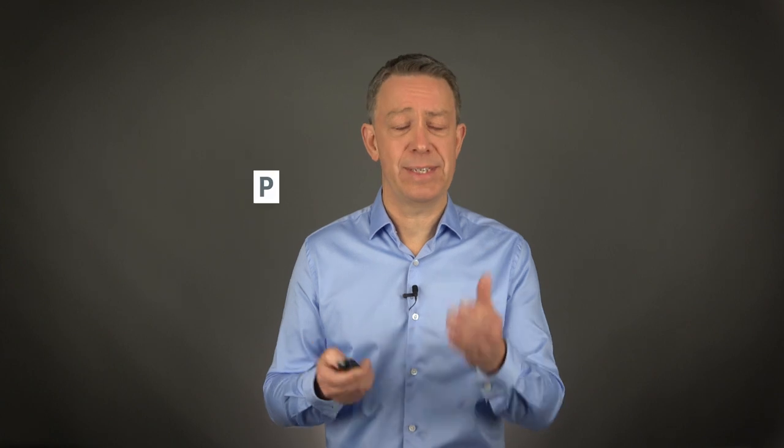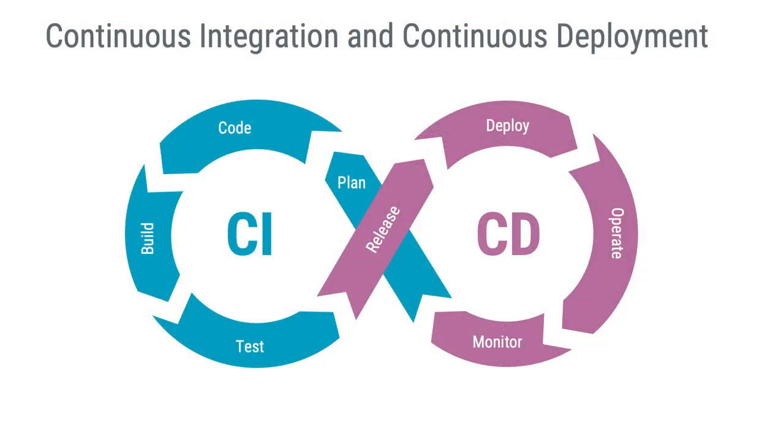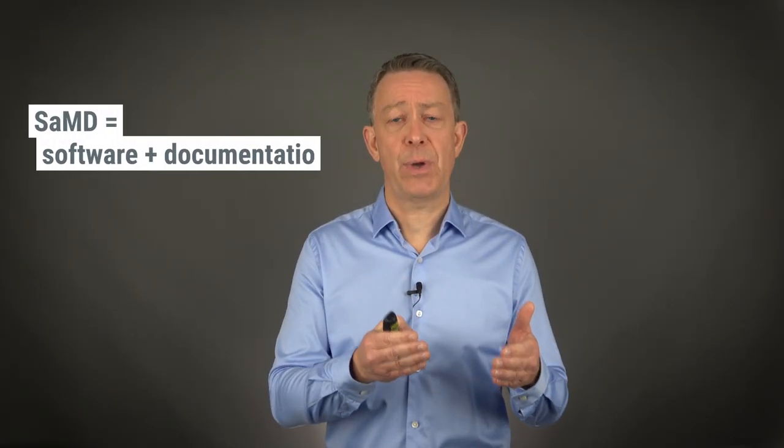Speaking of software release takes me to software release versus product release. In modern software development, it is common to find continuous integration and continuous deployment. Continuous delivery is a software development methodology where the release process is automated — every software change is automatically built, tested, and can be deployed to production at any time. This is cool, but before you get too excited, this is usually a software release and not a product release. When talking about software as a medical device, in an audit situation, I would expect to find accompanying documents such as the instruction for use and evidence of a successful design validation in your product release. You could say that a software as a medical device product is the combination of software and its relevant documentation.